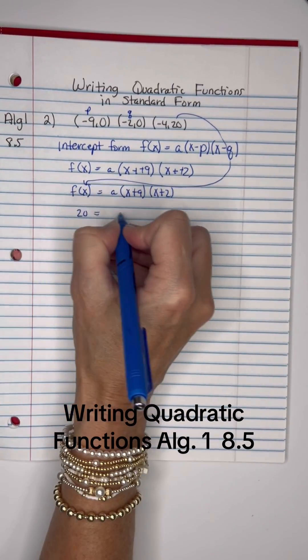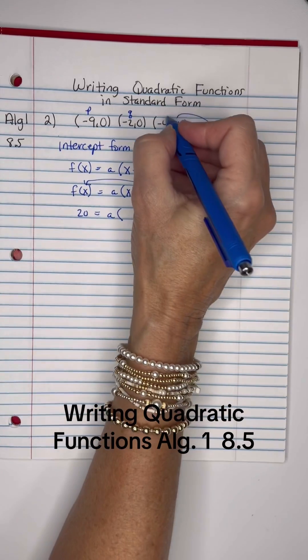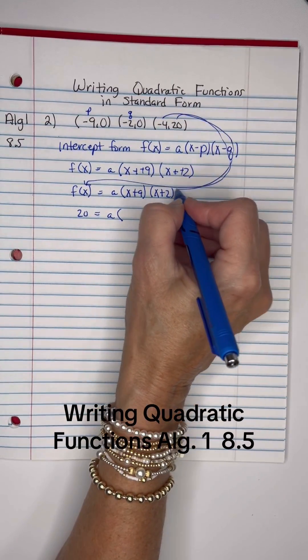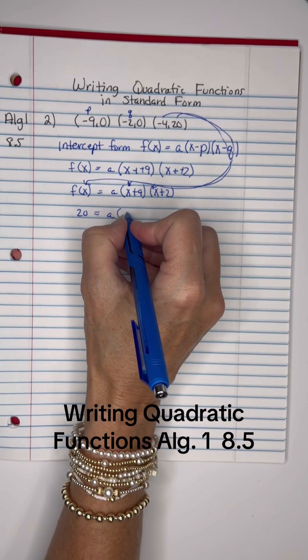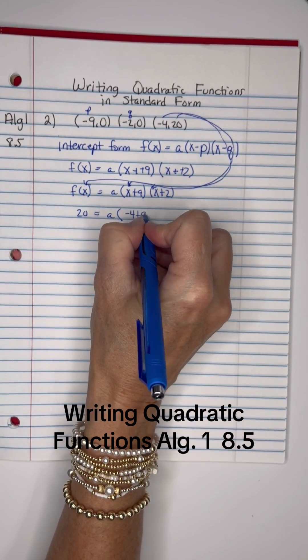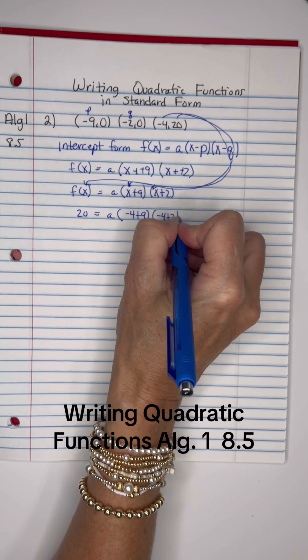20 equals a, I'm looking for, and then this negative 4 right here, that's going to be going into the x's positions here and here. So that will be negative 4 plus 9 and negative 4 plus 2.